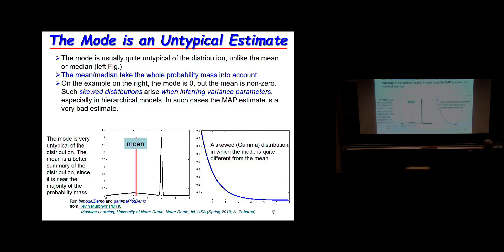Imagine a posterior that looks like a broad distribution with a tiny spike — the MAP estimate is at the spike, but the probability mass is elsewhere, making it unrepresentative. Similarly, a distribution where the MAP is at theta equals zero while most probability mass is away from zero is problematic. This type of distribution arises, for example, when modeling priors for precisions or variances.